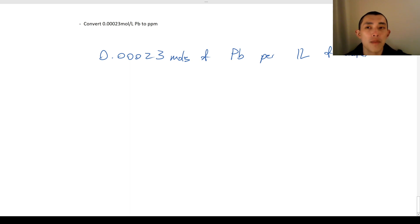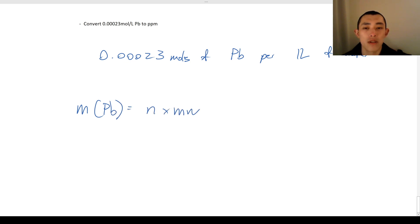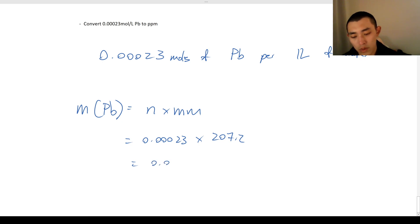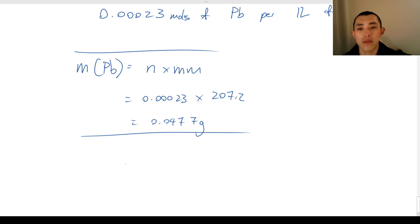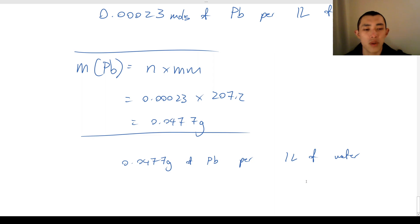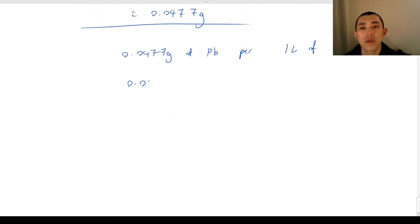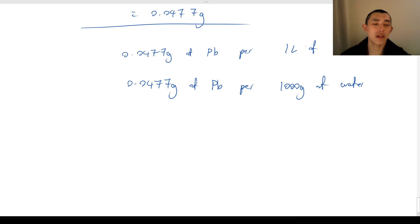As mentioned, one mole of lead must have some mass — let us convert this into mass. The mass is equal to moles times the molar mass, so moles of lead multiplied by the molar mass of lead. Therefore, we have 0.0477 grams of lead per 1 liter of water. Let's go further: 0.0477 grams of lead per 1,000 grams of water, because 1 liter equals 1 kilogram, which equals 1,000 grams.